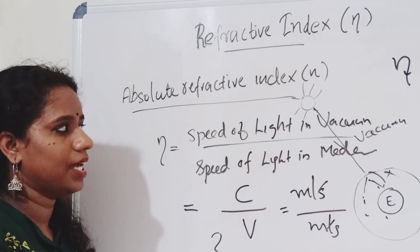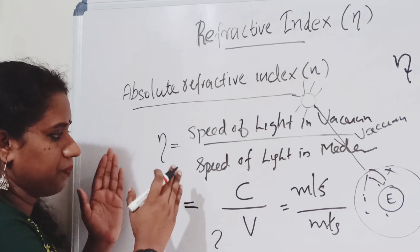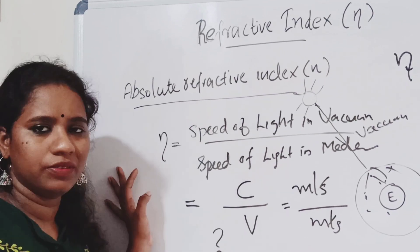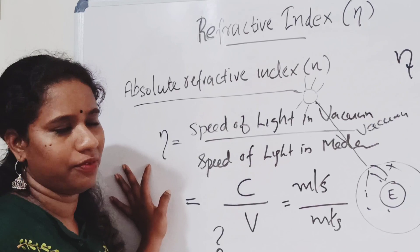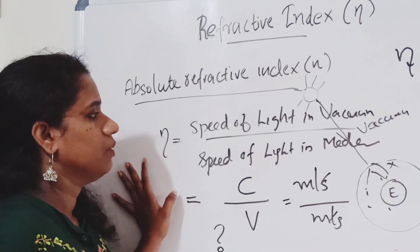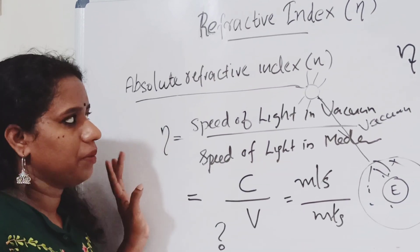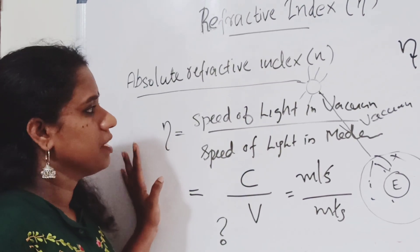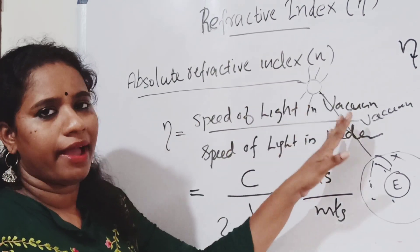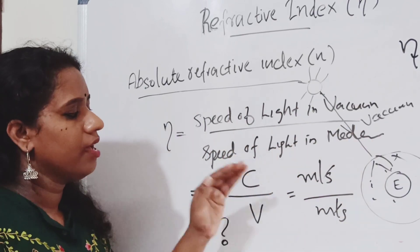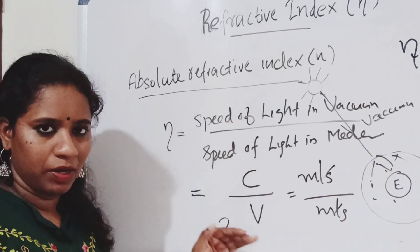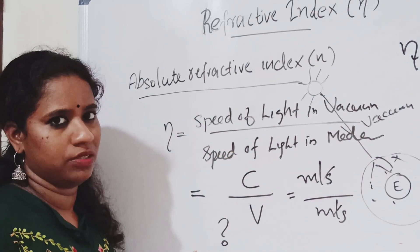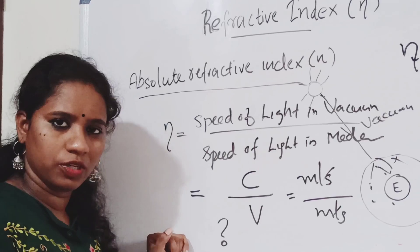The absolute refractive index of a medium is the speed of light in vacuum divided by the speed of light in the medium — that is C by V — and it does not have any unit or dimensional term.